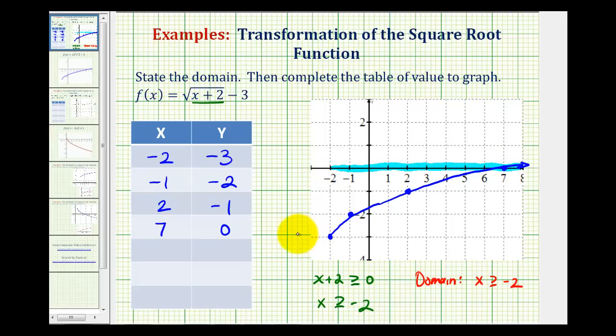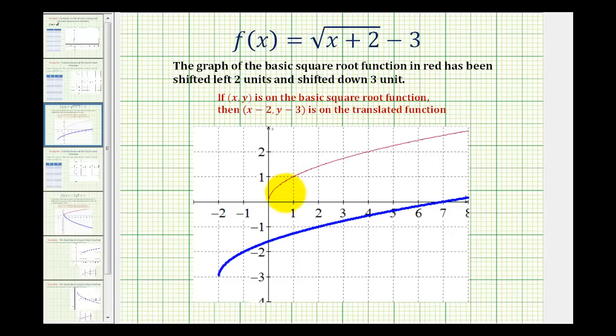Because we're now familiar with the basic square root function and function transformations, hopefully we recognize that because of this x plus two underneath the square root, this represents a horizontal shift left two units, and the minus three here on the end represents a vertical shift down three units. Which we can see here when we look at the basic square root function graph here in red and our transformed function here in blue.